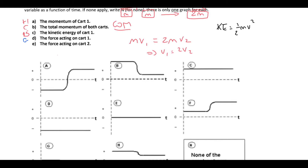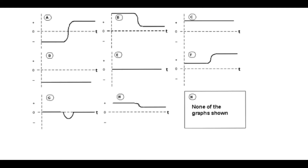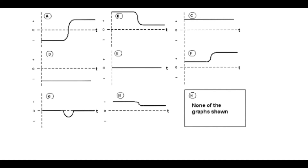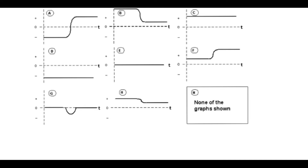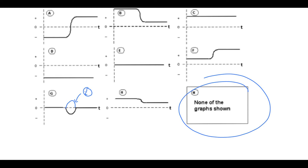In terms of the force acting on cart 2, Newton's third law essentially tells us it's equal and opposite. So what we should have for cart 2 is essentially the same graph but positive — so that's actually none of the graphs shown, because none of them show that shape.